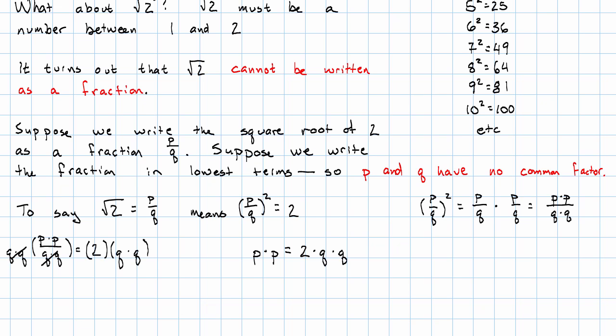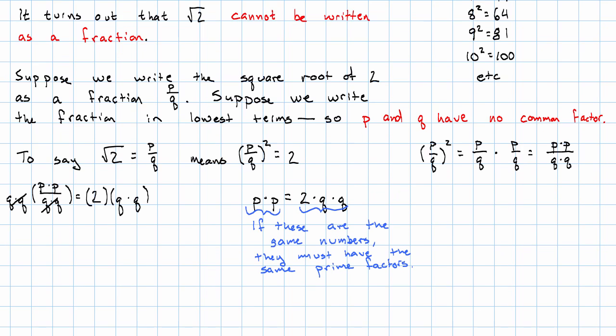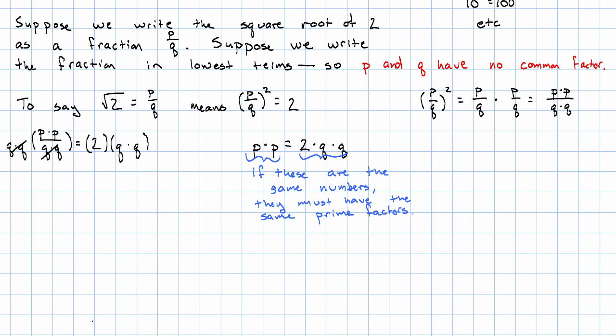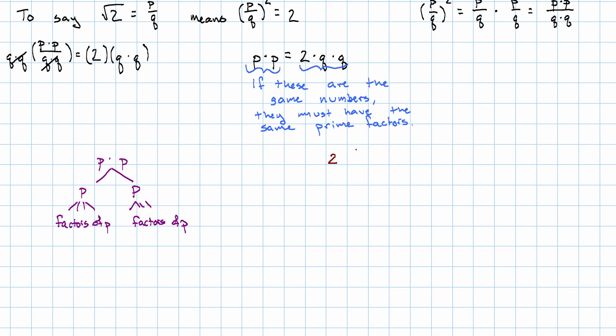If these two are the same numbers, they must have the same prime factorization. Because remember, we know that any number can factor into primes in just one way. But now we have p times p. If I make a factor tree for that, obviously it has p and p as its factors, and then coming down from those, we have the factors of p and the factors of p again. On the other hand, my 2 times q times q, if I make a factor tree, I have 2 and q times q. I'll break that up as a q and another q.